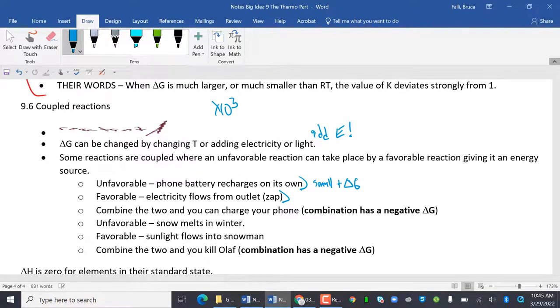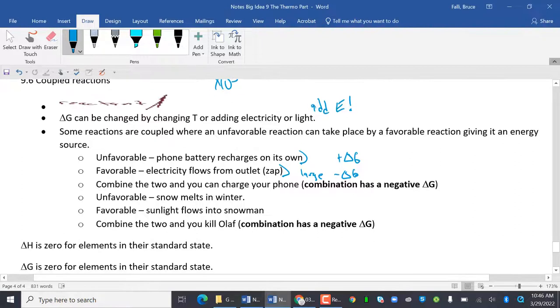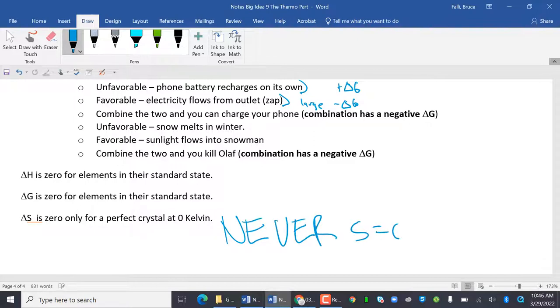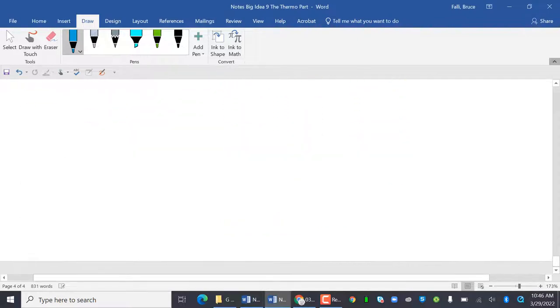Unfavorable: snow melts in winter. Favorable: sunlight flows into snowman. Combine the two and you kill Olaf. Delta H is zero for elements of standard state. Delta G is zero for elements of standard state. S is zero only for a perfect crystal at zero Kelvin, which means never. S equals zero never happens. But what else happens is we're done.